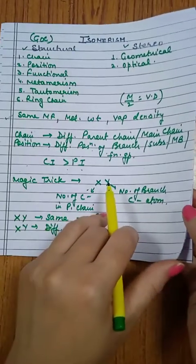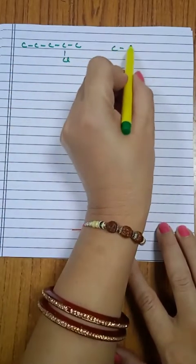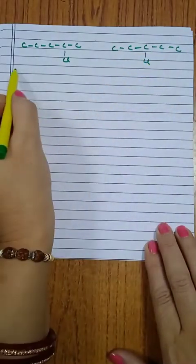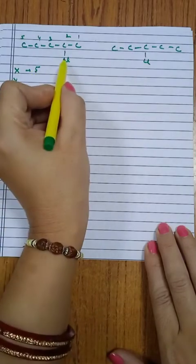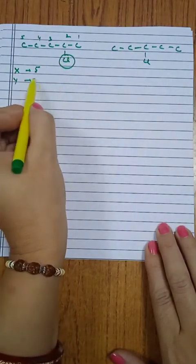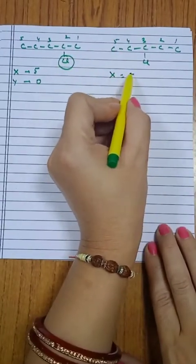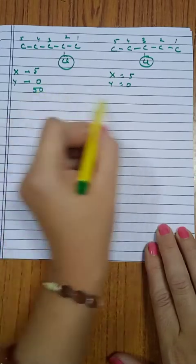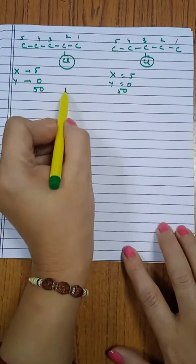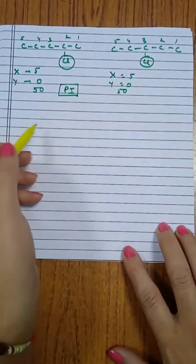Let's apply the magic trick. Consider a five-carbon chain with chloro at the second position, and another with chloro at the third position. For the first compound: longest chain has five carbons so X = 5; the substituent chloro has no carbon atoms so Y = 0. For the second compound: again X = 5 and Y = 0. Since X and Y are the same (5, 0) for both, these are position isomers — 2-chloro vs. 3-chloro.